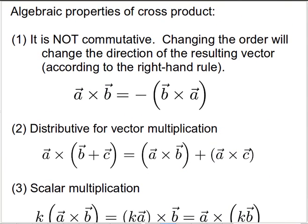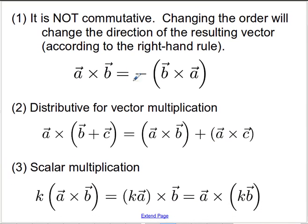Some algebraic properties of the cross product: the most important one is that it's not commutative — when you change the order you introduce a negative, giving the opposite direction. The distributive rule does work — we took that on faith when deriving the algebraic form. Scalar multiplication also works the same as in most operations: you can apply the scalar to vector A, or to vector B, or to the resulting cross product vector.